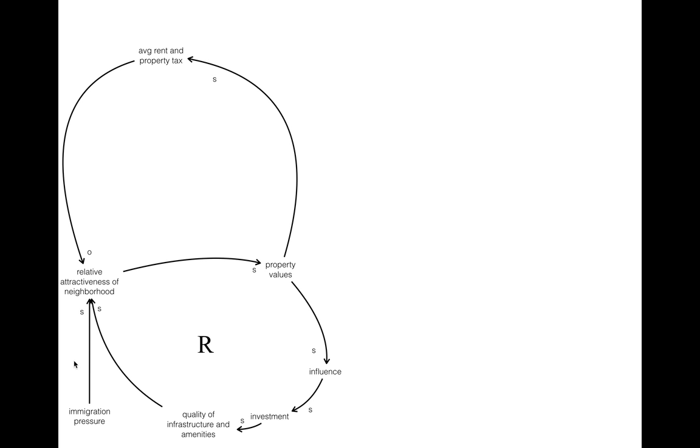That's a good time for me to explain these little S's and O's. S means a change in the same direction. More investment leads to more infrastructure, more infrastructure leads to more attractiveness. But more rent and property tax, or higher rent and property tax, has an opposite effect—that's this O on the relative attractiveness of the neighborhood. While the bottom feedback loop tends to drive property values up and up and up, this second feedback loop is the one that slows and eventually causes a plateau. We call that balancing feedback, represented with a B.